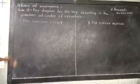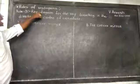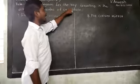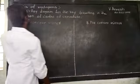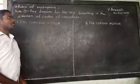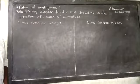Next, rule 3. Ray diagram for the ray traveling in the direction of center of curvature.